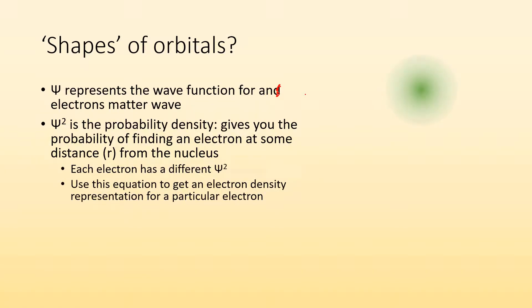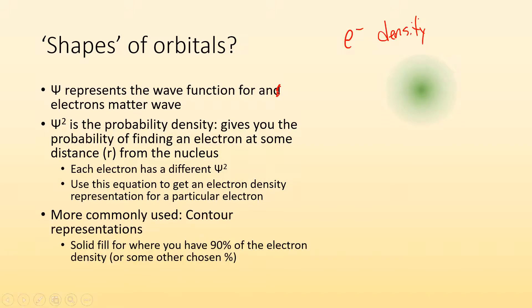Now, each electron has a different psi squared, a different probability density. So we can use this equation to get an electron density representation for a particular electron. You can see where it's darker, you're more likely to find an electron than where it's lighter. But more commonly used are contour representations, where we use solid fill for where you would have 90% of the electron density, or some other percentage. So instead of having this cloud, we have these solid contours, and we say 90% of the electron density is within this solid contour.